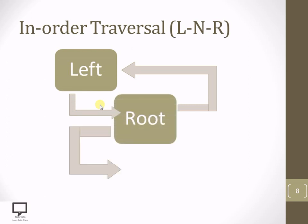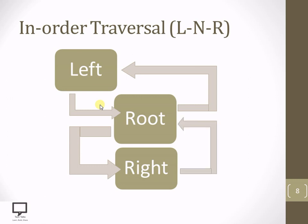Now if after processing the root node the left child is not present, then we need to check for a right child — whether the right child is present or not. If it is present, make it the root and again check whether that root has a left child or not.